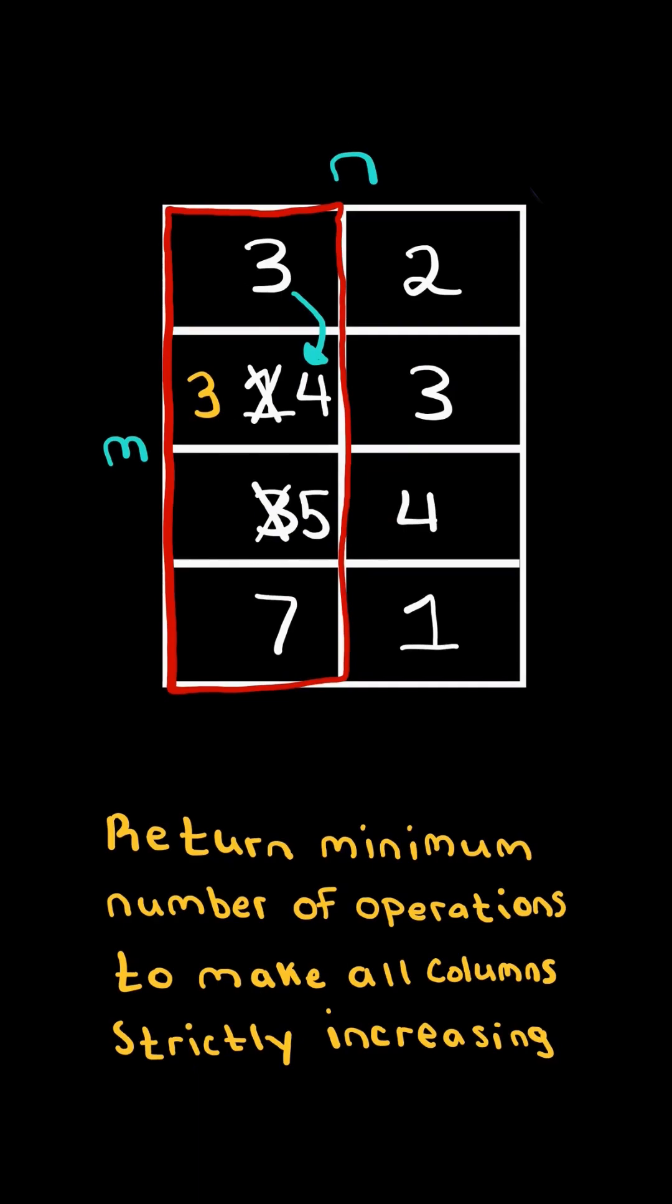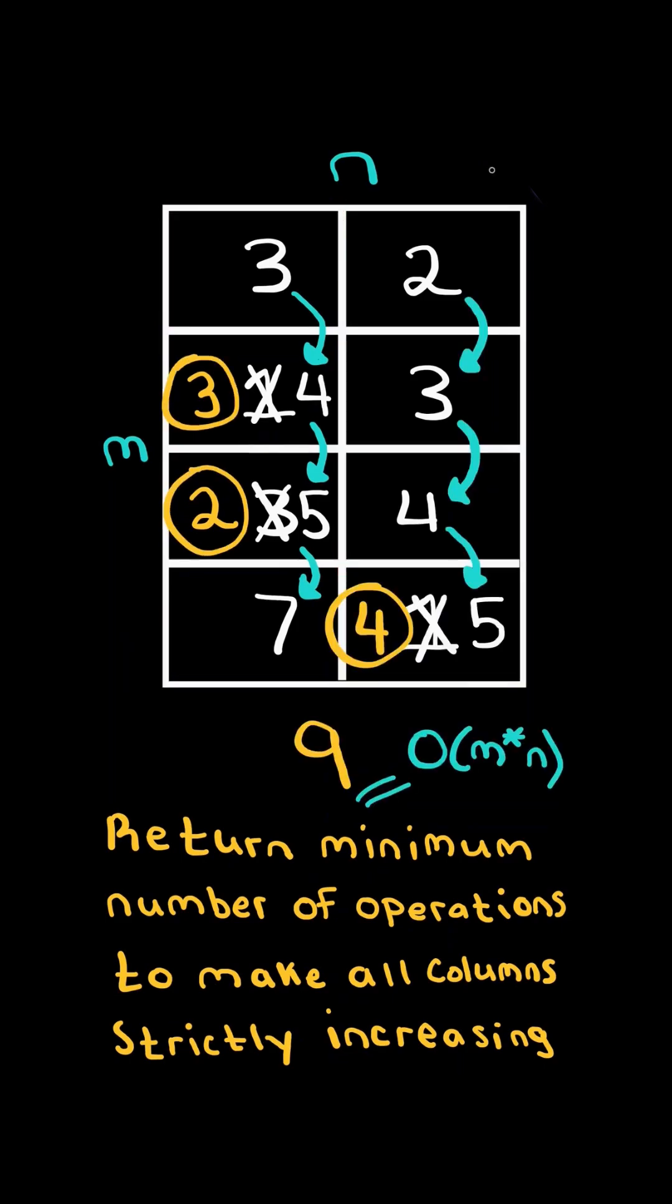Next, we update 3 to 5, so that it's strictly greater than 4. And from 3 to 5 is 2 operations. Now notice the first column is strictly increasing, and so we return the total number of operations.